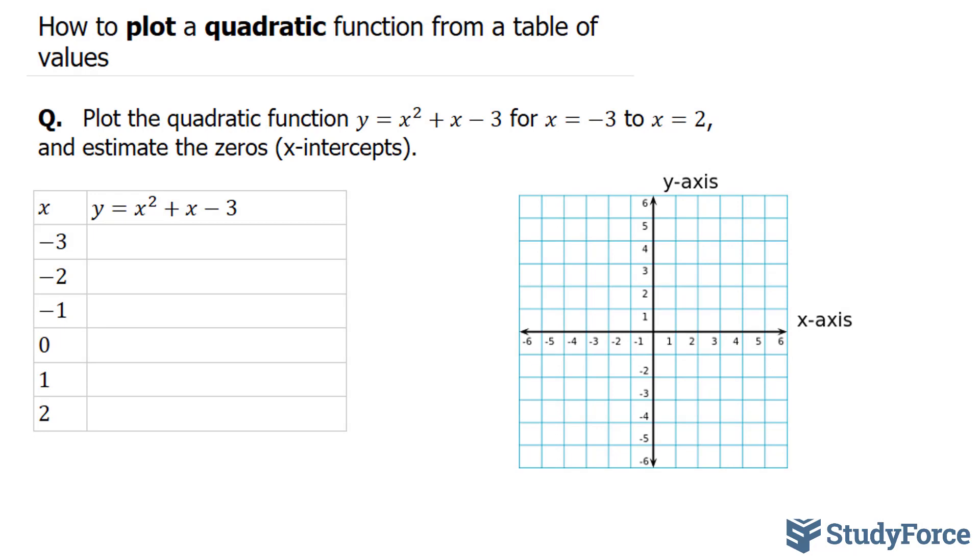To do this successfully, you need to create a table that looks like this, and you have to evaluate the function at each of these numbers. So starting with negative 3, we have negative 3 to the power of 2. Notice that I have embedded the negative 3 in brackets, and you need to do that, especially if your number is negative. Plus negative 3 minus 3. And you will repeat the same process for all of these x-coordinates.